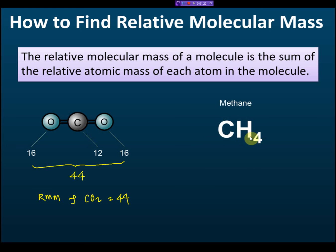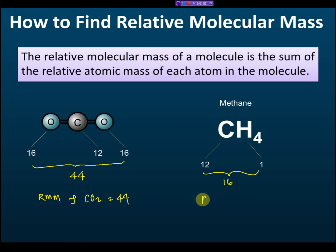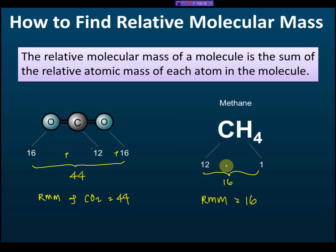Another example: methane has one carbon and four hydrogens. The relative atomic mass of carbon is 12, and hydrogen is 1. With four hydrogens, the total is 12 plus 4 times 1 equals 16. So the relative molecular mass of methane is 16. This confirms that relative molecular mass equals the sum of the relative atomic masses of each atom inside the molecule.